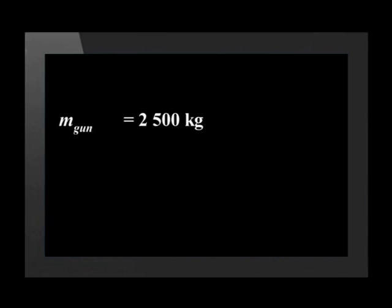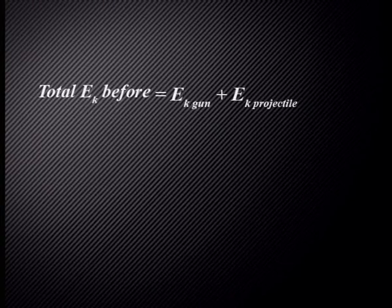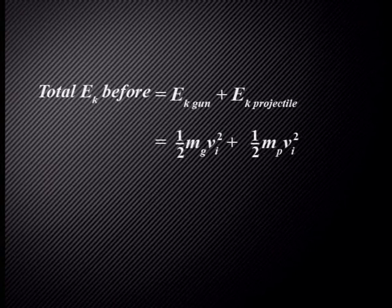Let's calculate the kinetic energy of the gun and projectile before the explosion. The mass of the gun is 2,500 kilograms. The mass of the projectile is 34.5 kilograms. The initial velocity of the projectile and gun is 0 meters per second as they are both stationary. The total kinetic energy of the system before the explosion is equal to the initial kinetic energy of the gun plus the initial kinetic energy of the projectile. This is equal to half times the mass of the gun times the gun's initial velocity squared plus half times the mass of the projectile times the projectile's initial velocity squared.